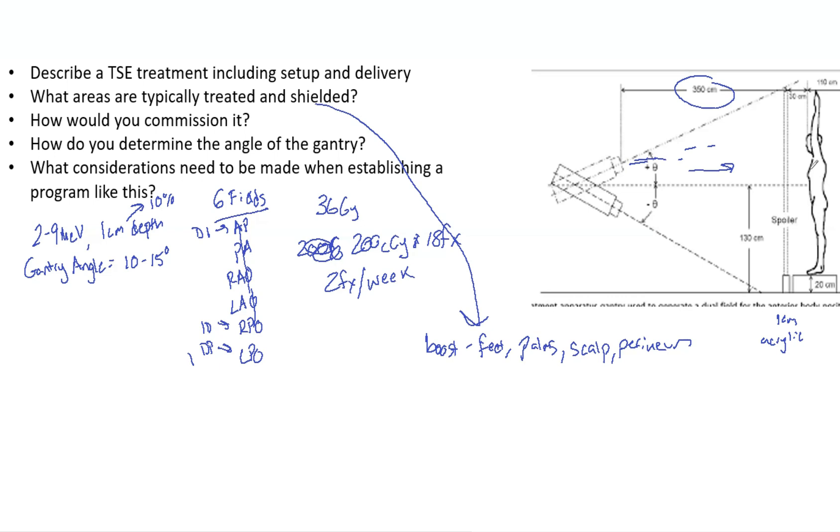When establishing a program like this, you want to use TLDs or diodes on the patient. That will give you a better idea of what dose they're getting, verifies your setup, and gives you something to document and peace of mind, knowing that each fraction they're getting approximately 200 cGy to their skin.